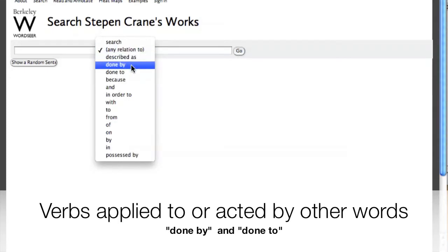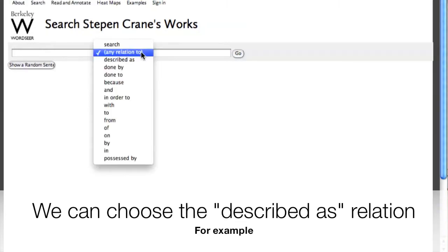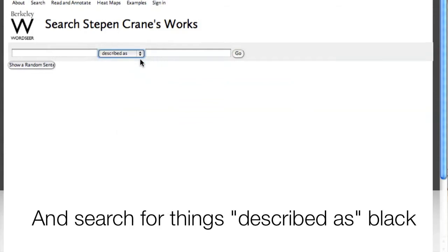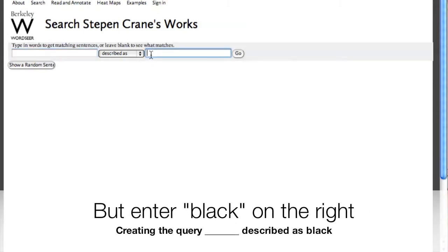These correspond to grammatical relationships between words. For example, I can choose the described-as relationship, which retrieves adjectives. I can search for various combinations of adjectives being applied to other words by leaving one or none of the boxes blank.